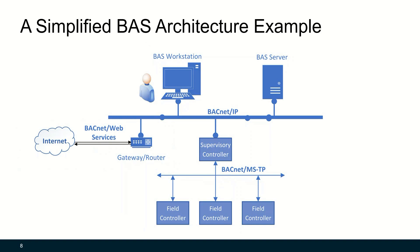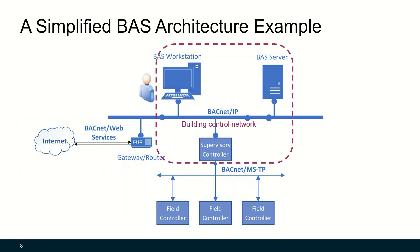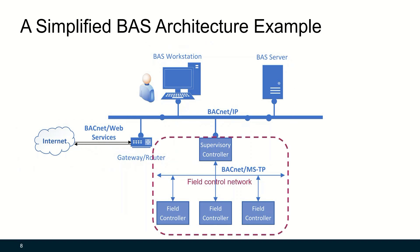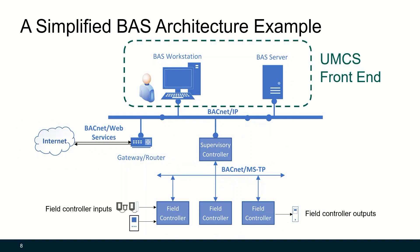Let's look at a simplified building automation system architecture example: enterprise IT network, building control network, and field control network. Field controller inputs and outputs are directly connected to field controllers. The workstation and servers together are also called the UMCS front-end.